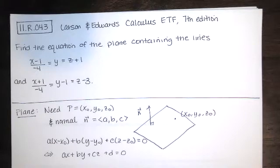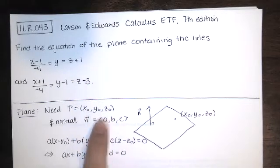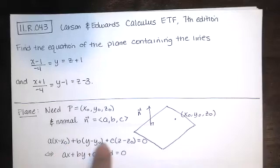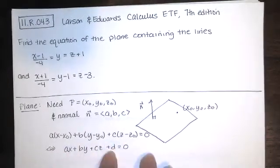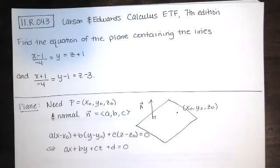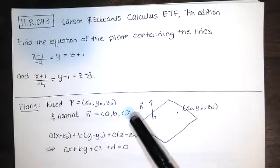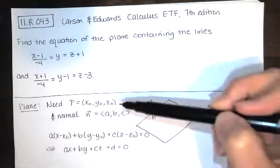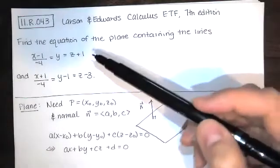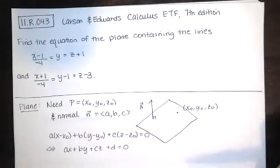We're asked to find the equation of a plane containing two lines given in symmetric form. Remember what we need when finding the equation of a plane: a point in the plane and a normal vector to the plane. If we have a normal vector with components a, b, and c, and a point with coordinates x₀, y₀, z₀, we substitute those values into the equation, distribute and simplify to get the equation of the plane in general form. Sometimes people put the constant d on the other side. We were given neither a point nor a normal vector, but the two lines lying in the plane will allow us to find both.